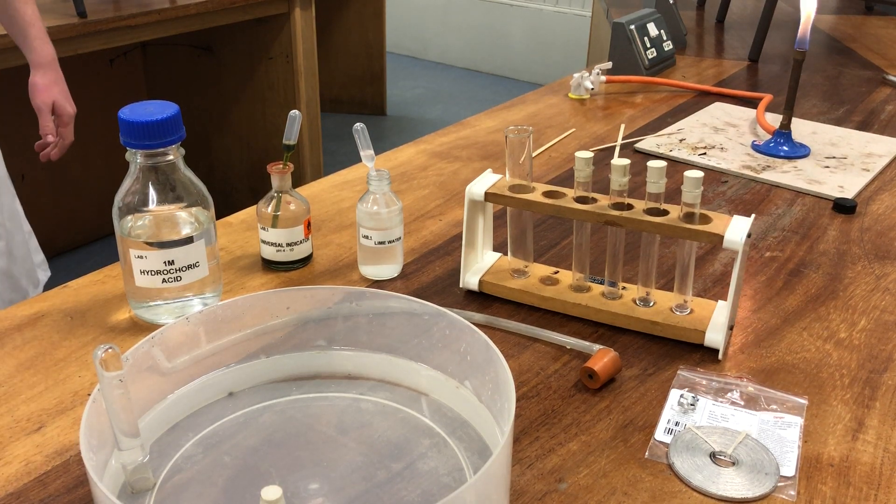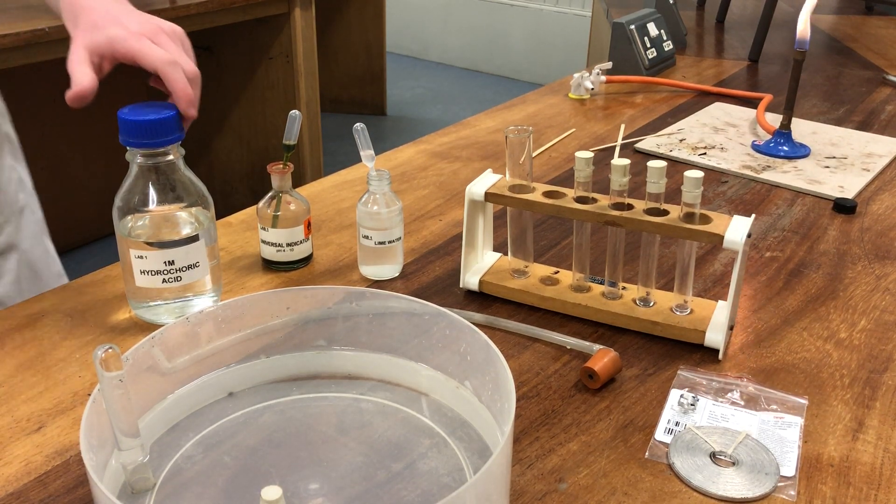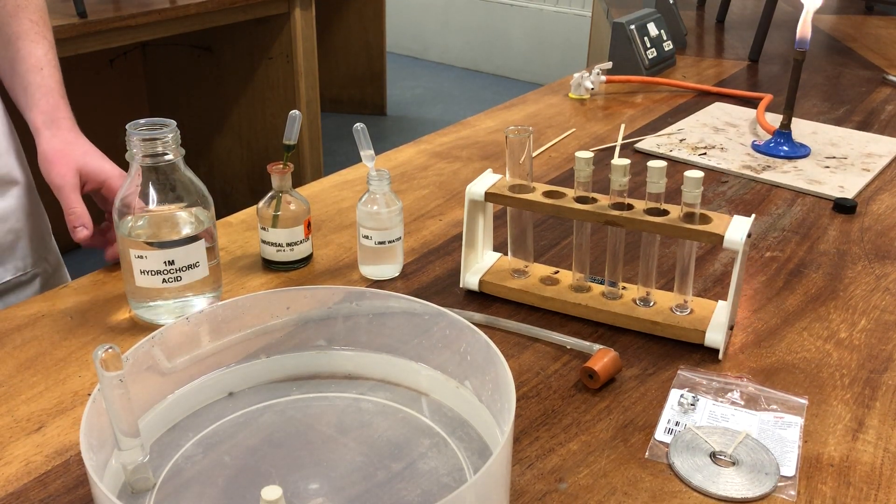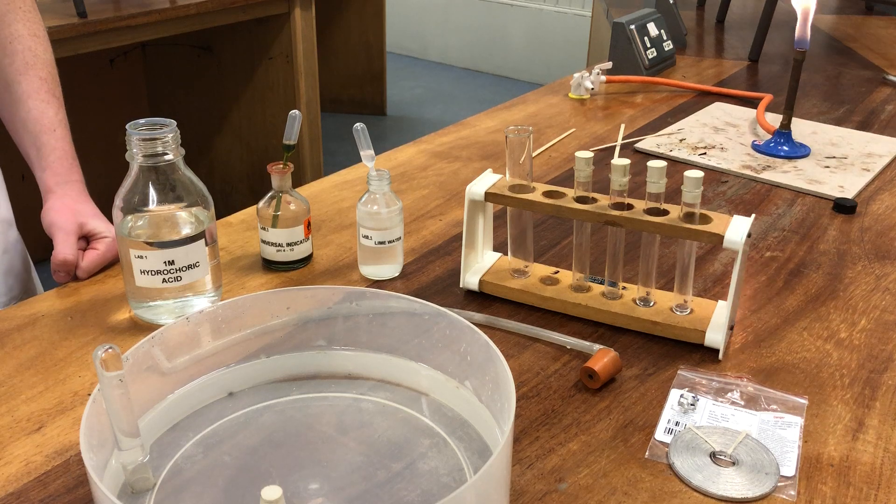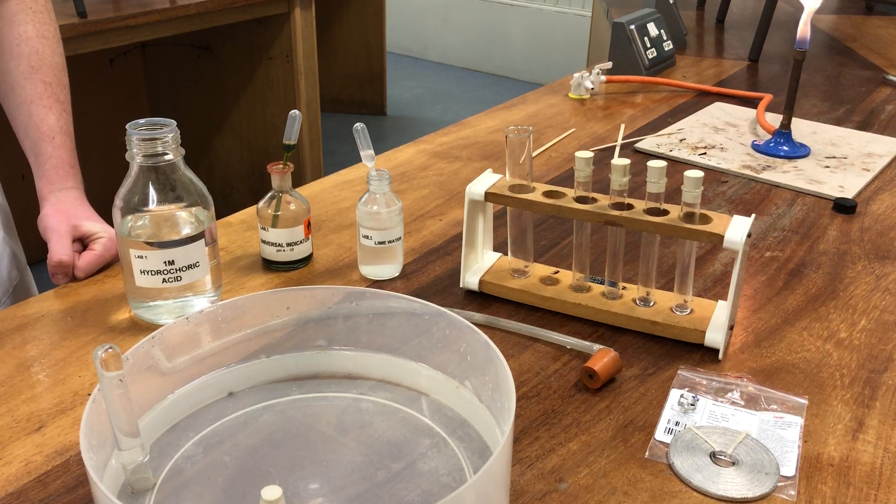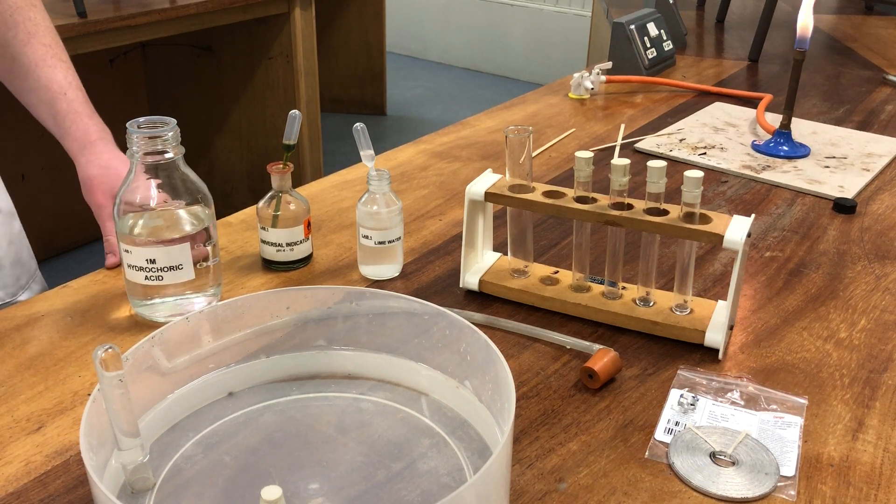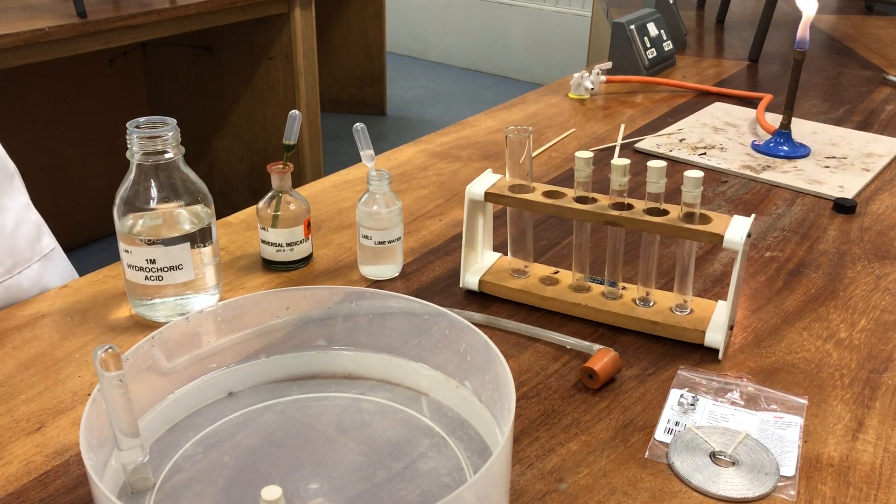We can make hydrogen gas by reacting a reactive metal such as magnesium, which we'll use here today, or zinc, or maybe calcium as well. We react it with hydrochloric acid, one molar hydrochloric acid that we will react together.